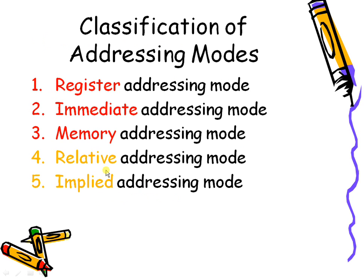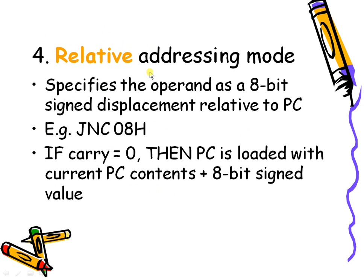In relative addressing mode, the direct address is added with the program counter to give the next address. The operand is specified as an 8-bit signed displacement relative to the PC. For example, JNC 08 means jump if no carry — if the carry flag is 0, then 8 is added to the contents of the PC and stored back into the PC to give the next instruction address.